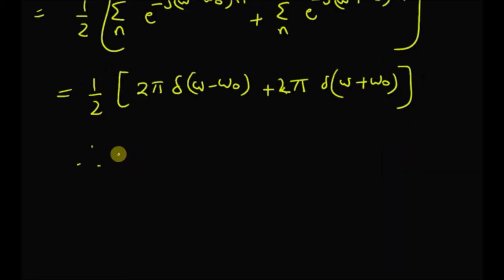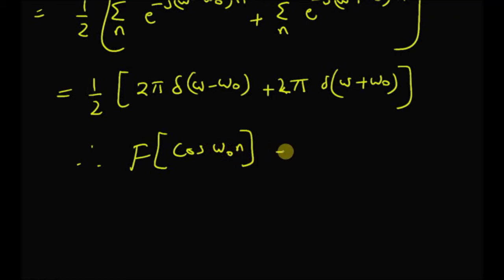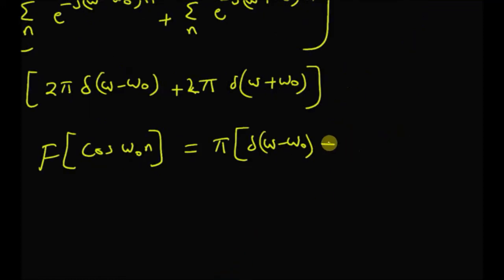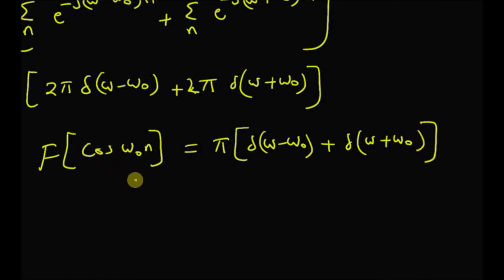Therefore, the DTFT of cos(ω₀n) is equal to π·[δ(ω−ω₀) + δ(ω+ω₀)]. Thus, a cosine signal in the discrete-time domain is represented by two impulses in the frequency domain — one on the left side at −ω₀ and one on the right side at +ω₀.